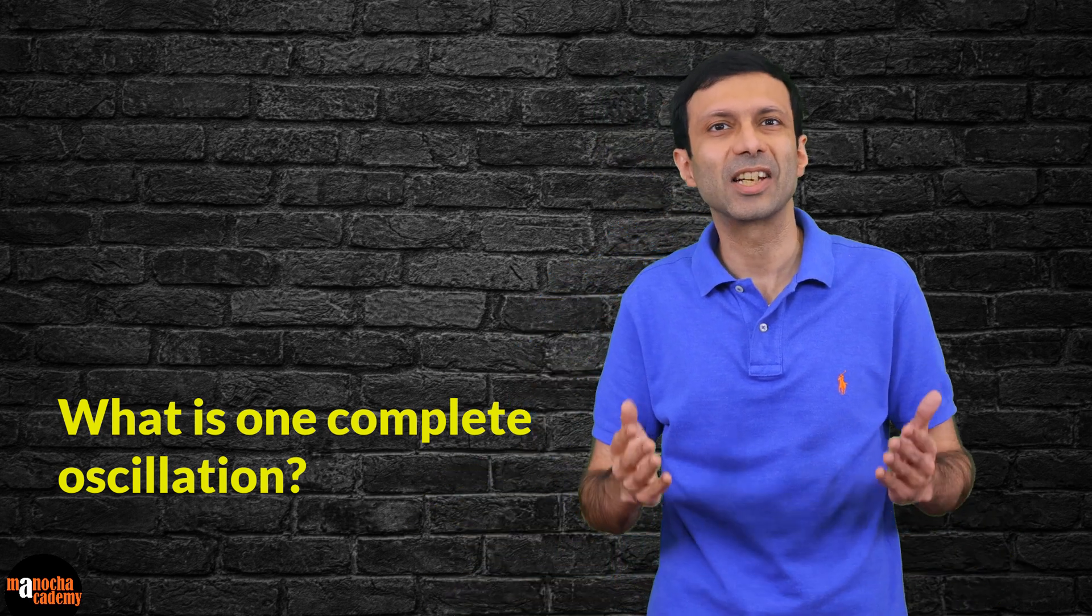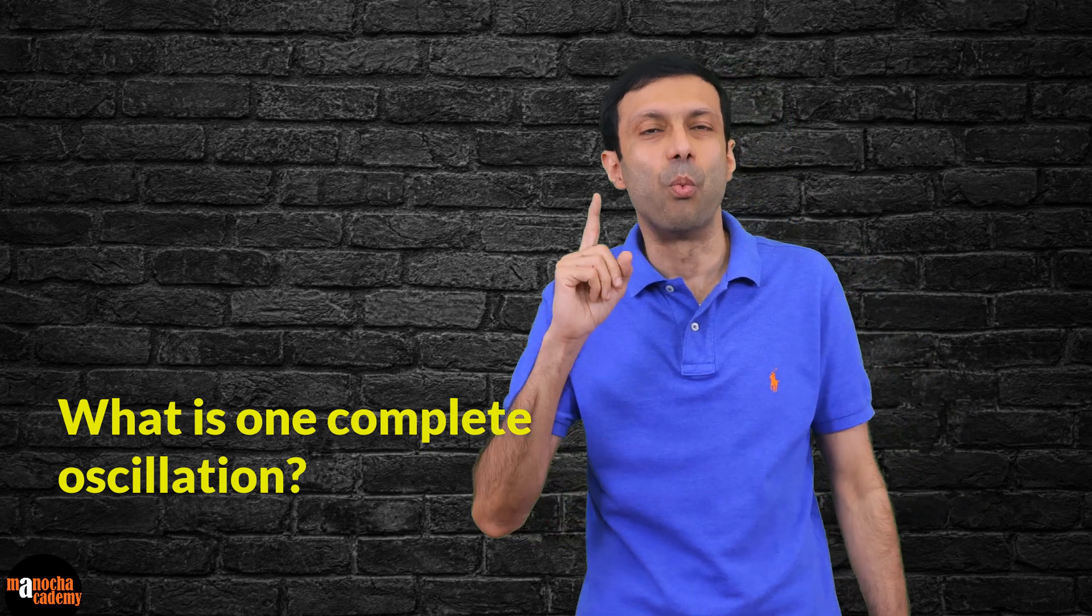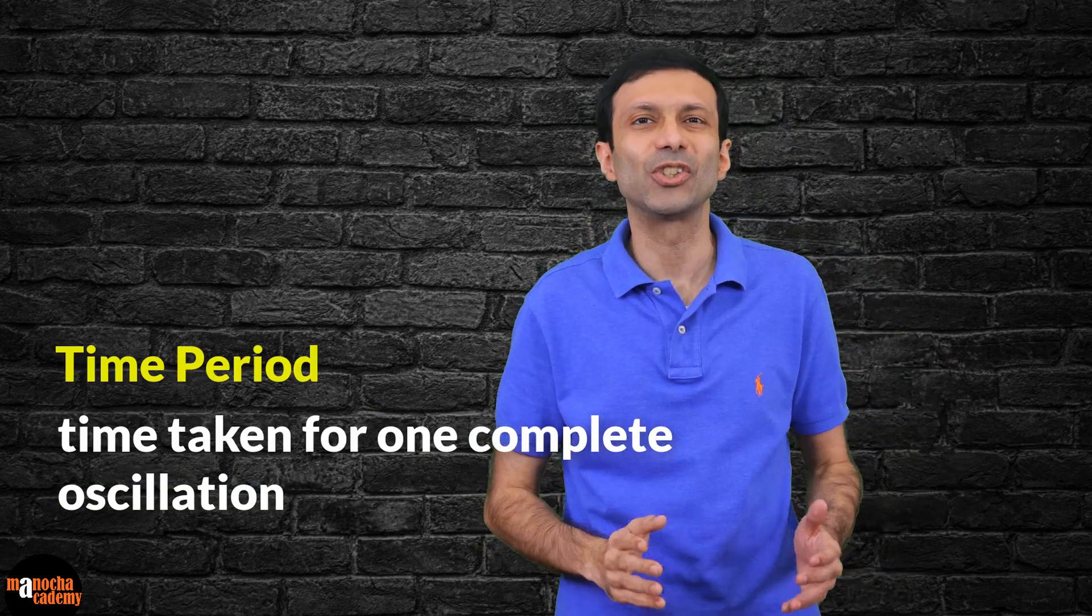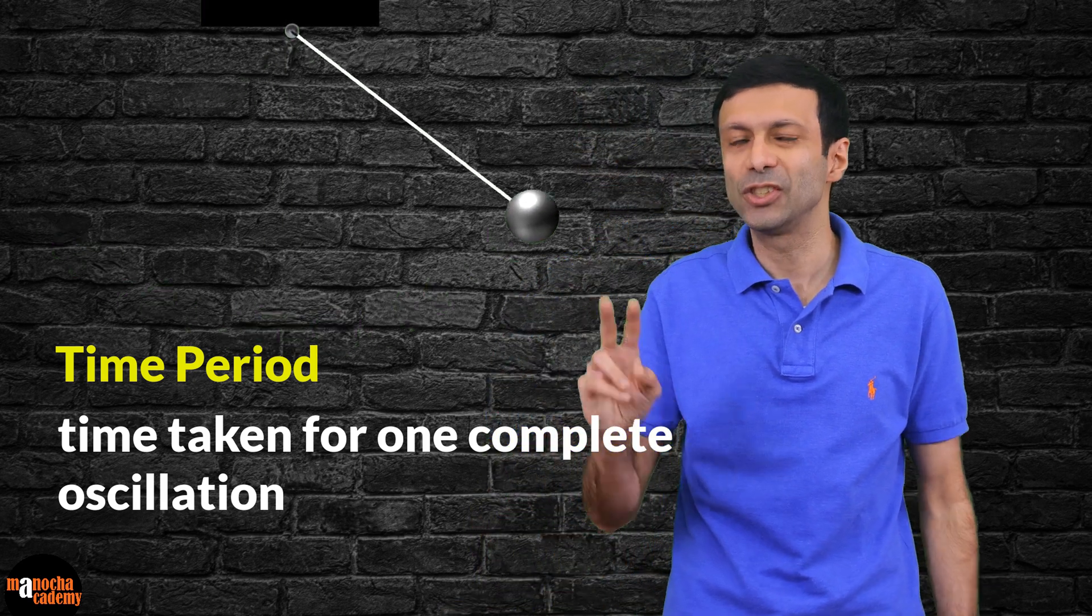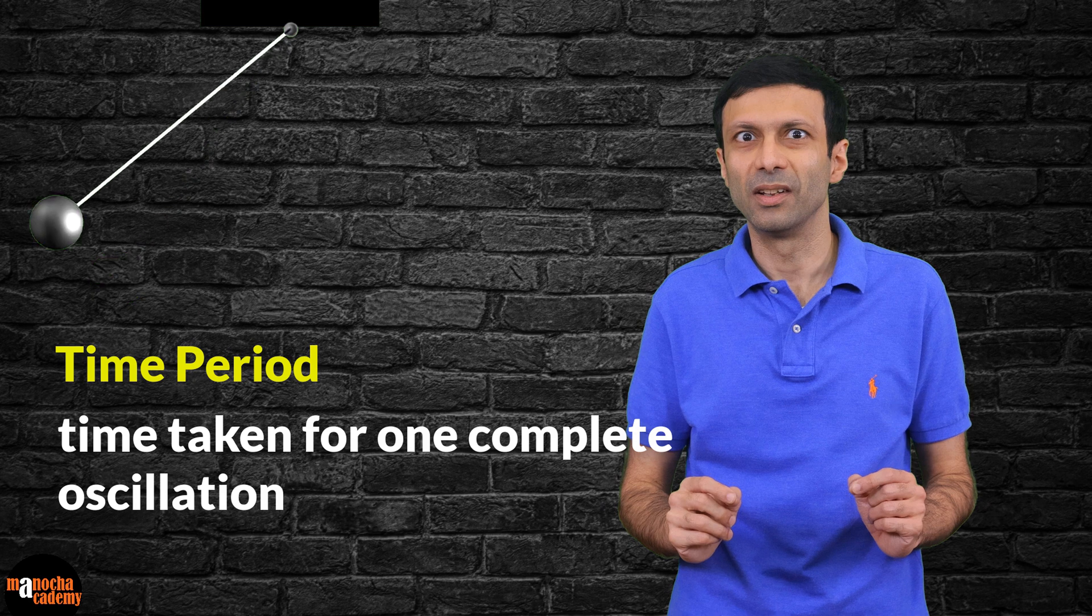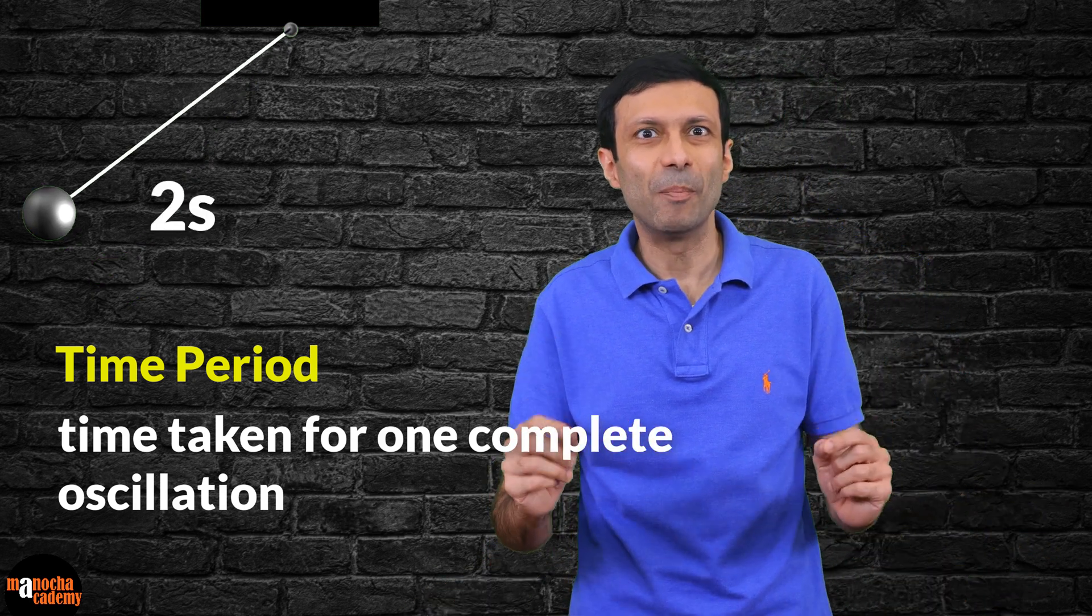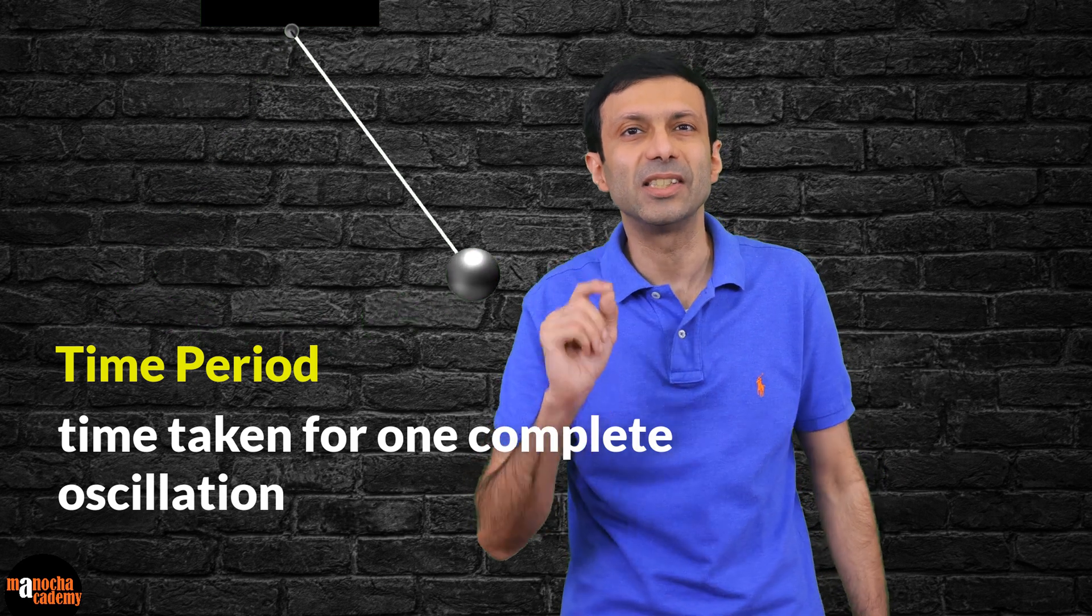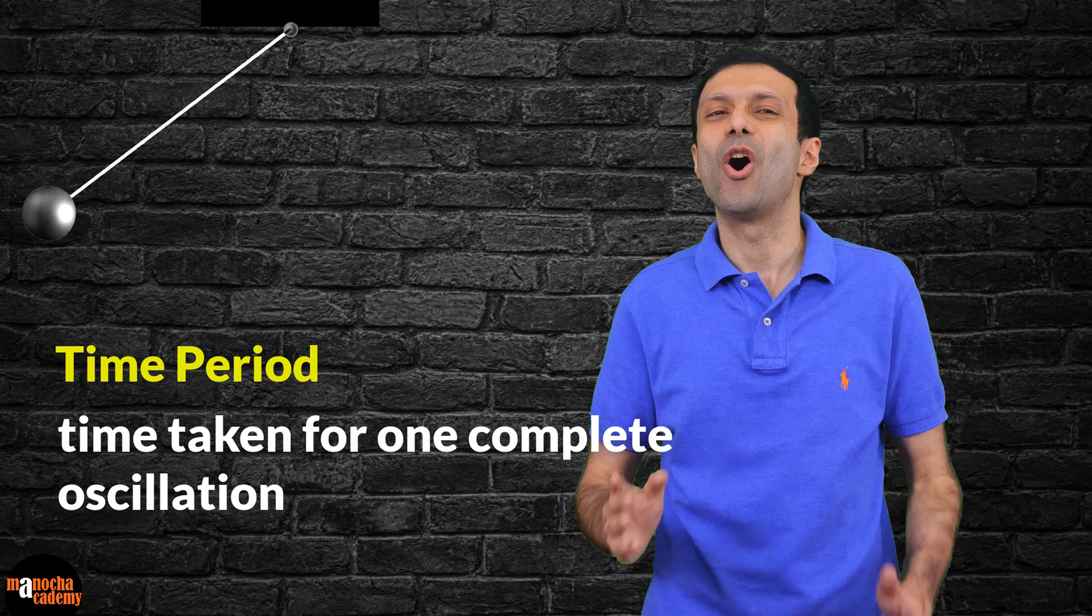So whichever way you measure it, from whichever position, that's a complete oscillation. Now, the time taken for one complete oscillation is called the time period. Frequency is defined as the number of oscillations in one second.